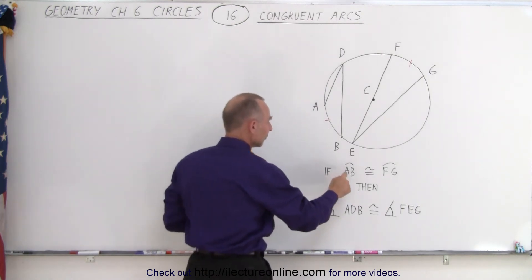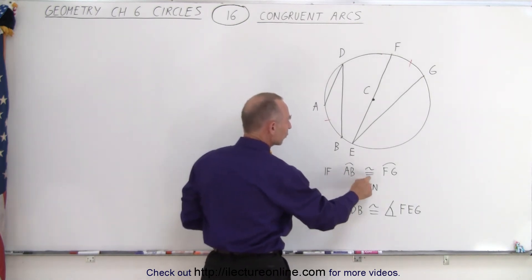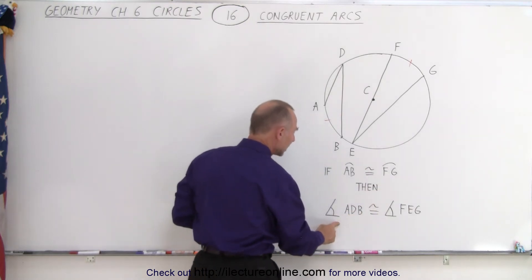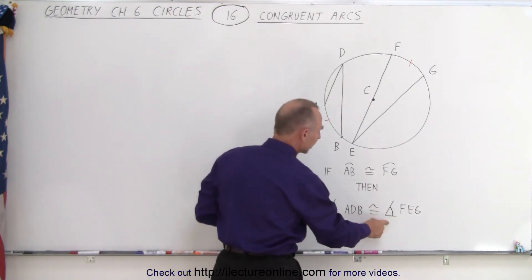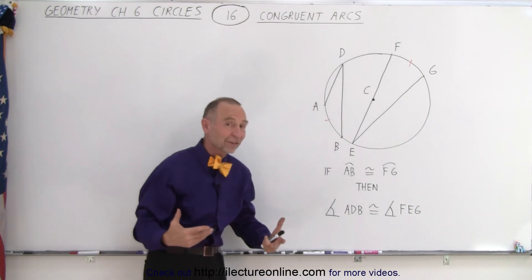In other words, if the arc AB is congruent to the arc FG, then the angle ADB must be congruent to the angle FEG. In other words, they must have the same measure.